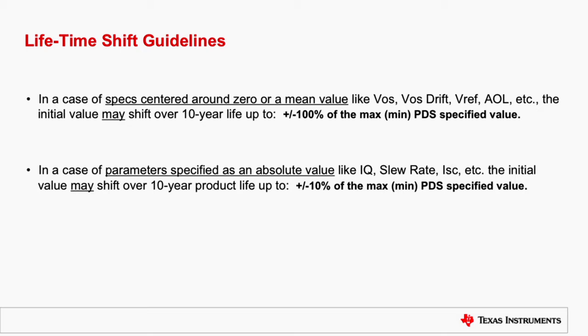There is also the kind of specs centered around absolute value, like quiescent current, slew rate, or short circuit current, where the specs can change over the life of a product by plus minus 10% of the maximum or minimum specified PDS value.